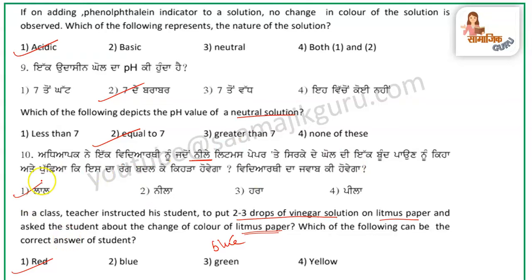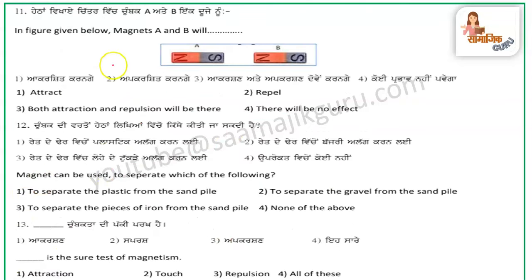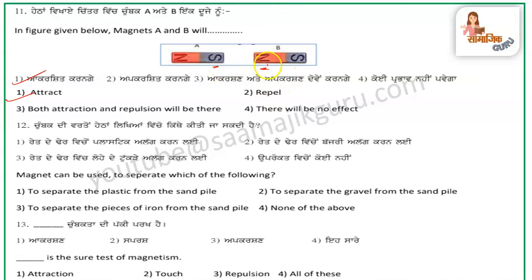Question number 11: in the figure given below, magnet A and magnet B will attract one another, because it is a south pole and a north pole — opposite poles attract.